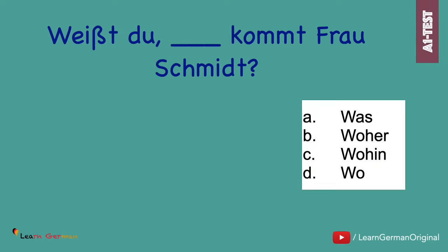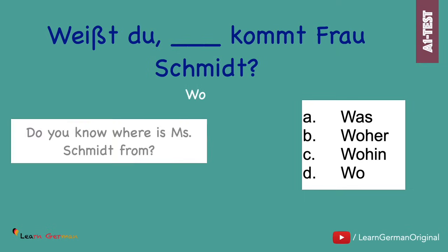Let's look at the next one. Weißt du? Kommt Frau Schmidt? This is a simple one as you have to just select which question word completes the question. And the answer is: Weißt du, woher kommt Frau Schmidt?